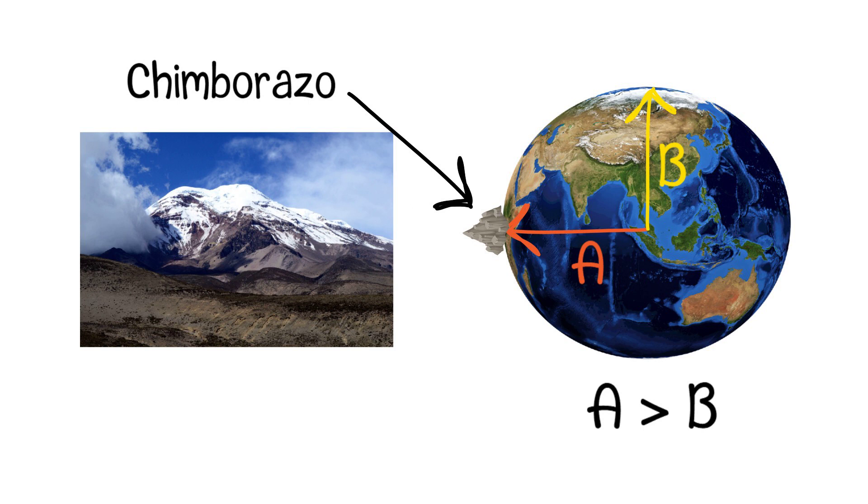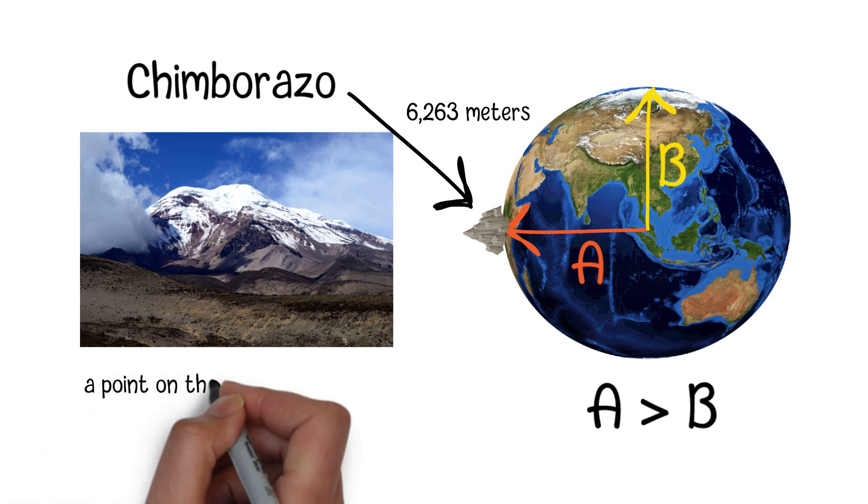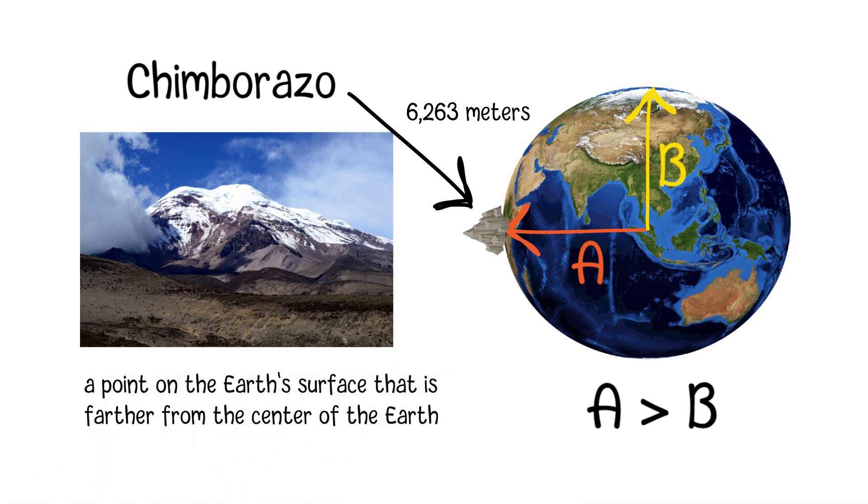Chimborazo's summit has a substantial altitude of about 6,263 meters, equivalent to 20,548 feet above sea level. When you combine this elevation with its equatorial location, it results in a point on the Earth's surface that is farther from the center of the Earth.